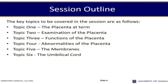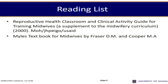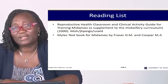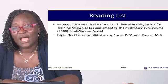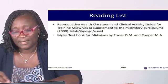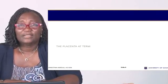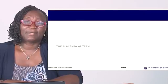By the end of the session, we want to be able to examine the placenta after its delivery and list the characteristics of a normal placenta so that you'll be able to identify an abnormal placenta. Our session outline covers the placenta at term, examining the placenta, the functions of the placenta, abnormalities of the placenta, the membranes, and the umbilical cord. There is a major reading list — the first is the Reproductive Health Classroom and Clinical Activity Guide, which contains a checklist on how to examine the placenta.